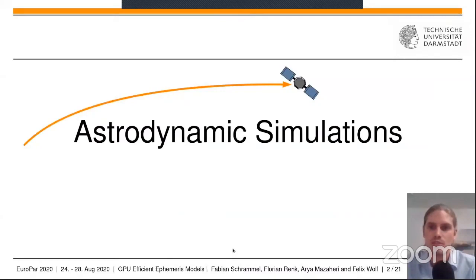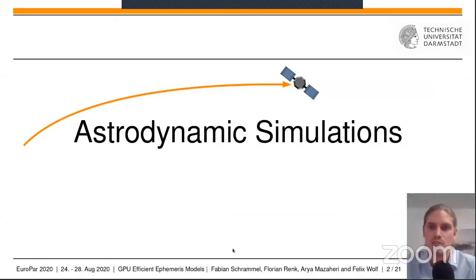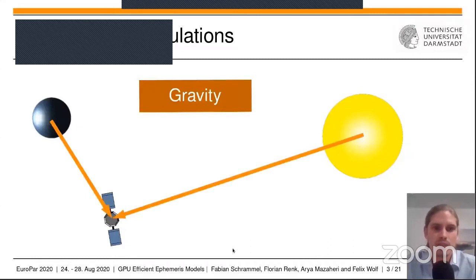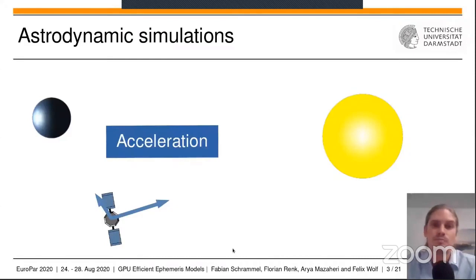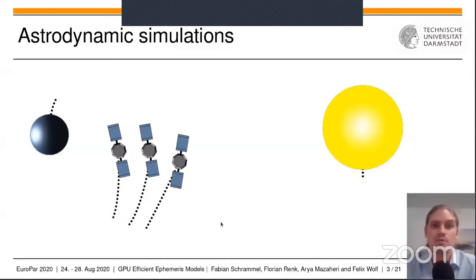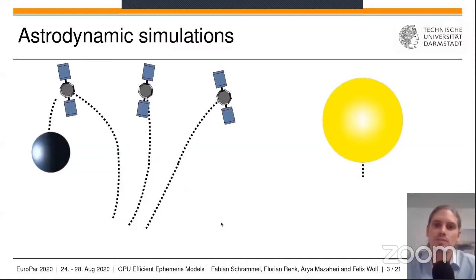Ephemeris models are used to calculate the trajectory of spacecrafts within astrodynamic simulations. The movement of spacecrafts within our solar system is primarily defined by gravity. Each body exerts a gravitational force on each other, which leads to multiple accelerations affecting the spacecraft's future trajectory. Slightly different initial states for the spacecraft can cause a very different trajectory in the long run. What here first looks like a similar orbit changes tremendously, as the distance to the blue planet is very different for these spacecrafts. Now we see one spacecraft turn to the planet,